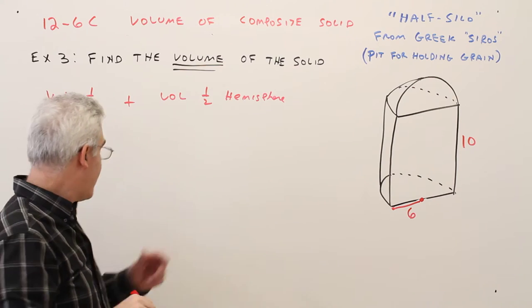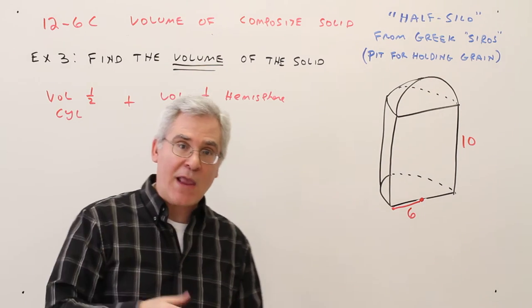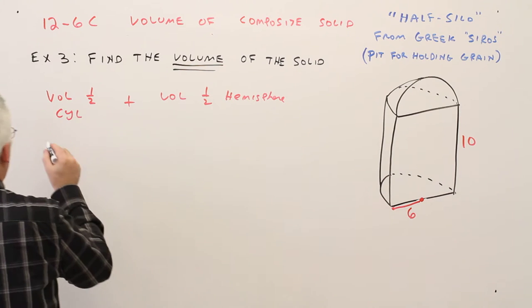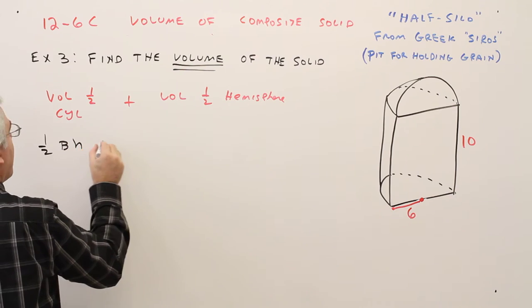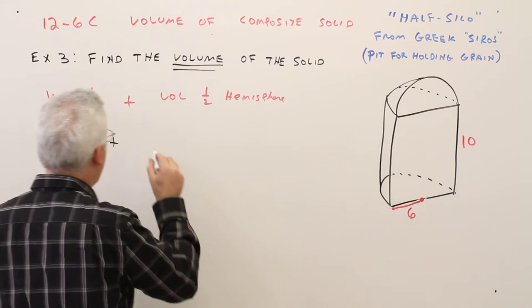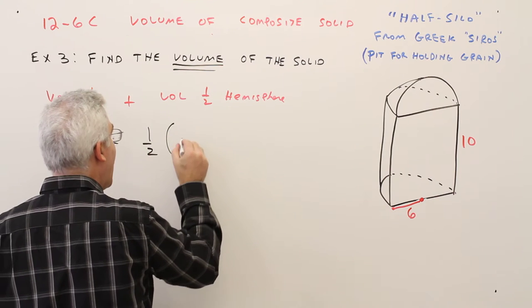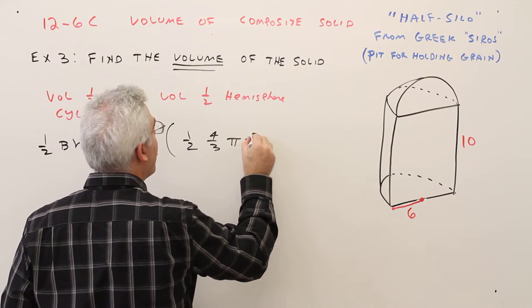Alright, so I'll write down the formulas. So a cylinder is base times height. So I've got a half of that. One half base times height plus the volume of half of a hemisphere. So one half of one half of four thirds pi r cubed.